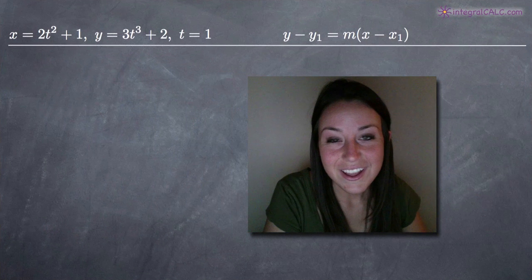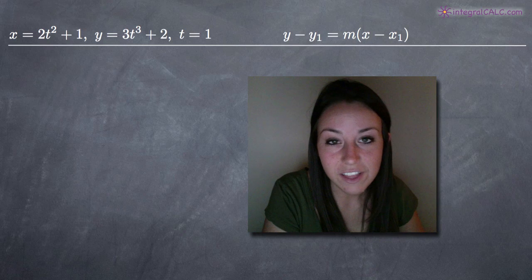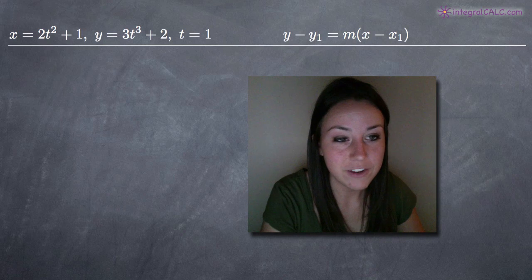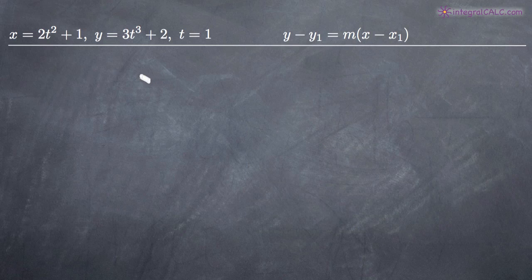Hi everyone! Welcome back to IntegralCalc.com. Today we're going to be finding the equation of the tangent line to the parametric curve defined by x equals 2t squared plus 1 and y equals 3t cubed plus 2. They've asked us to find the equation of the tangent line at the point t equals 1.